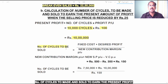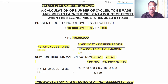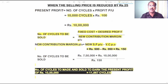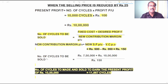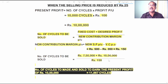Number of cycles to be made and sold to earn a desired profit of 10 lakh rupees: fixed cost plus desired profit, divided by contribution margin per unit. First, let us find the new contribution margin per unit. New selling price per unit minus variable cost per unit — there is no change in variable cost, so: new selling price 500 rupees minus variable cost 350 rupees = 150 rupees as the new contribution margin per unit.